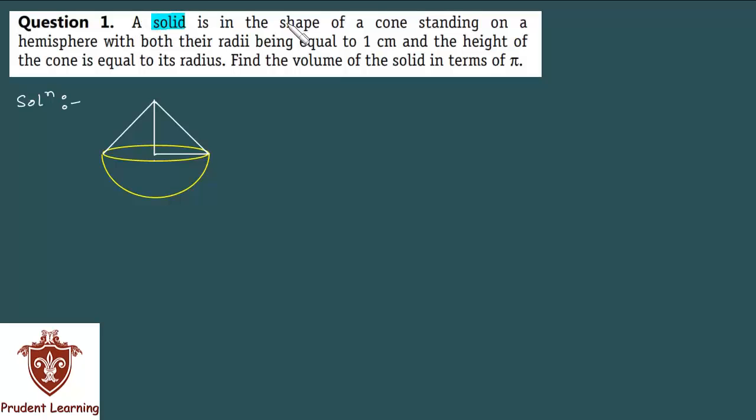A solid is in the shape of a cone standing on a hemisphere with both their radii being equal to 1 cm and the height of the cone is equal to its radius. Find the volume of the solid in terms of π.